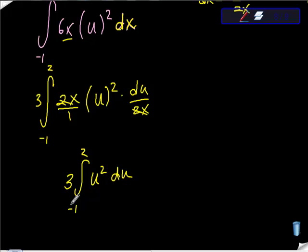Be prepared to see it both ways on the AP exam and know that they are the same. So you could bring this 3 back in and make it the definite integral from negative 1 to 2 of 3u squared du.